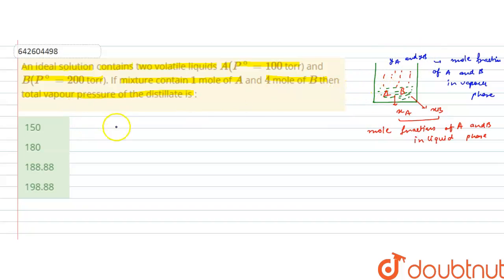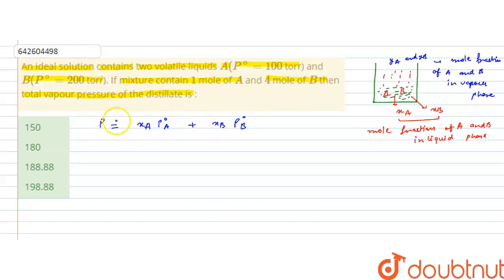The total vapor pressure of the mixture will be: mol fraction of A in liquid phase times the pure vapor pressure of A, plus mol fraction of B times the vapor pressure of B in pure state. This is according to Dalton's law — this gives the total vapor pressure of the mixture in the liquid phase first.